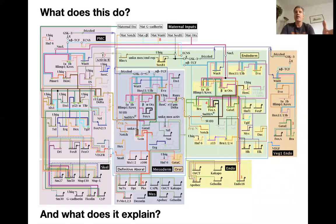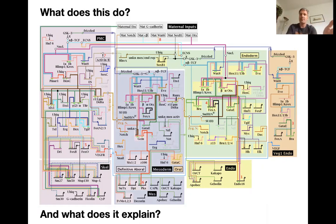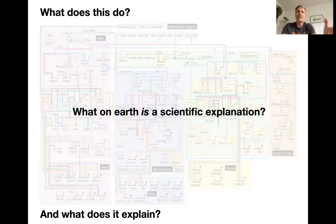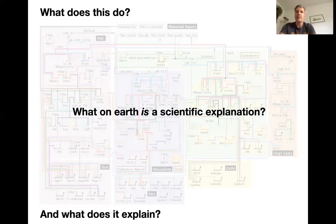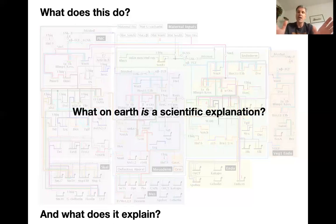Maybe we should take a step back and think about what these network models — these network graphs — actually explain, and do they explain anything? And maybe we have to take one step even further back and ask ourselves: what on earth is a scientific explanation in the first place? It's a very non-obvious question, the source of very long-standing philosophical debate. In this lecture we'll take a quick excursion into the philosophy of what explanations are and what kind of explanations biologists especially use.